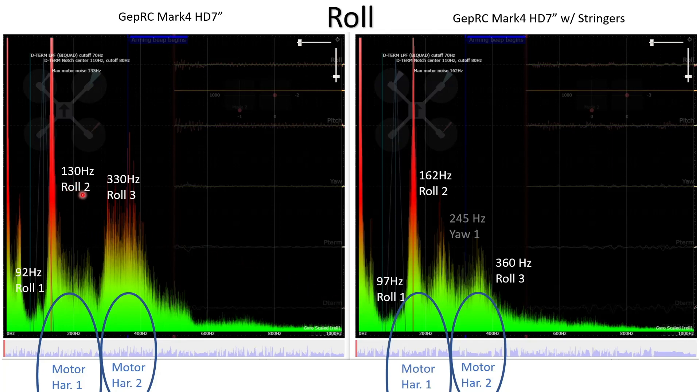If we look at the second roll mode without the stringers that occurs at 130 Hz and with the stringers fitted it's increased in frequency to about 162 Hz which is a pretty significant increase in percentage terms. It's also difficult to see but the peak has gotten significantly smaller as well.